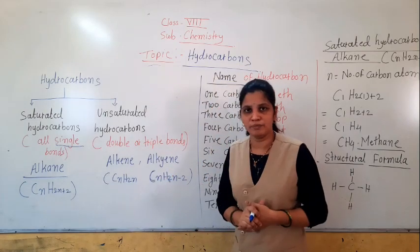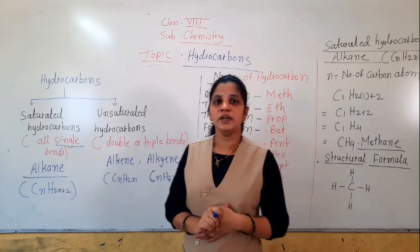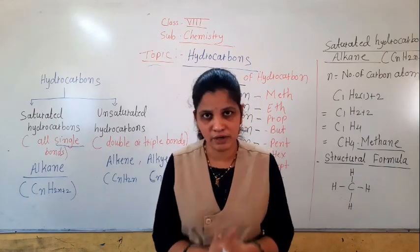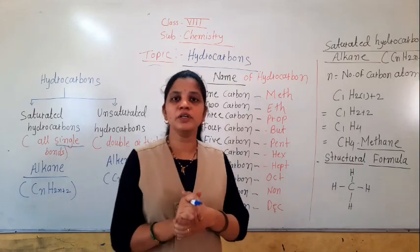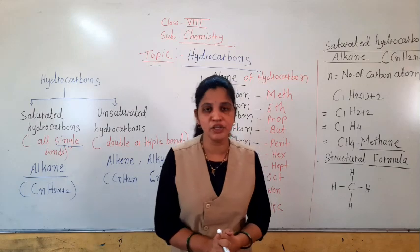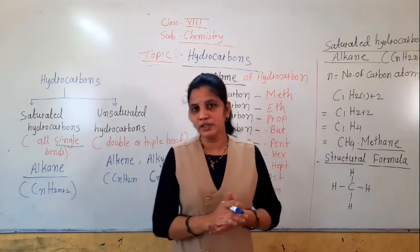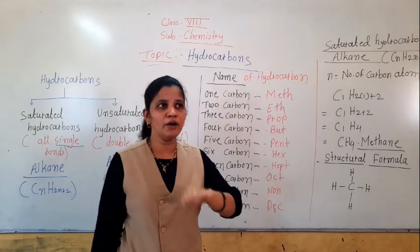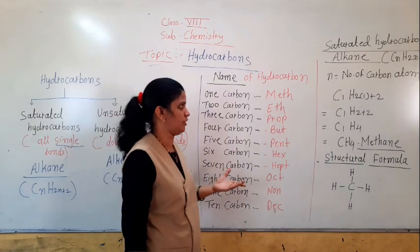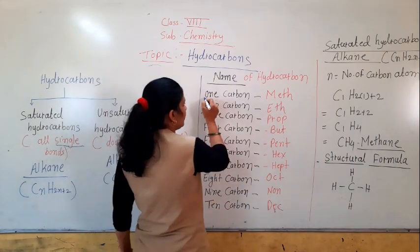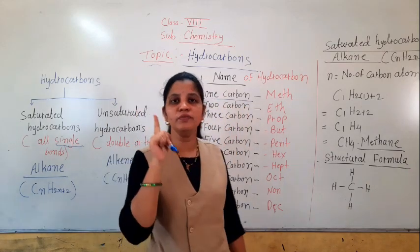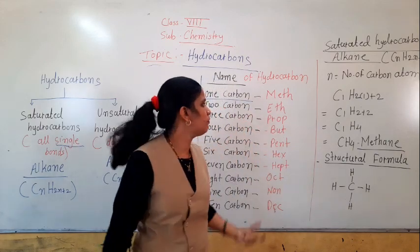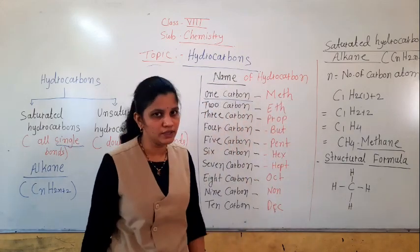For your basic information, you should know about this. Coal and petroleum — these all are carbon compounds. Most of the things present in our surrounding contain carbon. So carbon is very important in chemistry, in organic chemistry. We have learned about carbon and carbon compounds. Now, name of hydrocarbons — how to give the name of hydrocarbons? If a compound contains only one carbon, the name will start from meth.